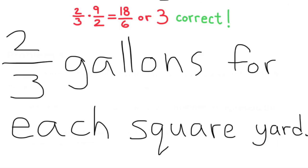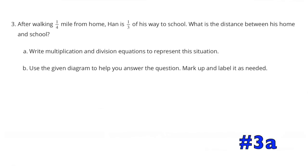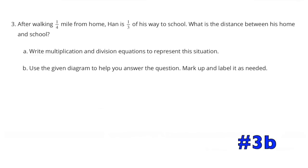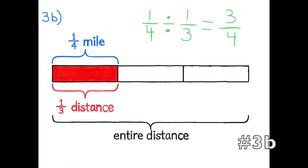Problem 3: After walking one-fourth mile from home, Han is one-third of his way to school. What is the distance between his home and school? Multiplication and division equations: one-third times what number equals one-fourth, and one-fourth divided by one-third equals what number. In the diagram, the section in red represents one-fourth of a mile, which is one-third of the way to school. One-fourth divided by one-third equals three-fourths, so the total distance is three-fourths of a mile.